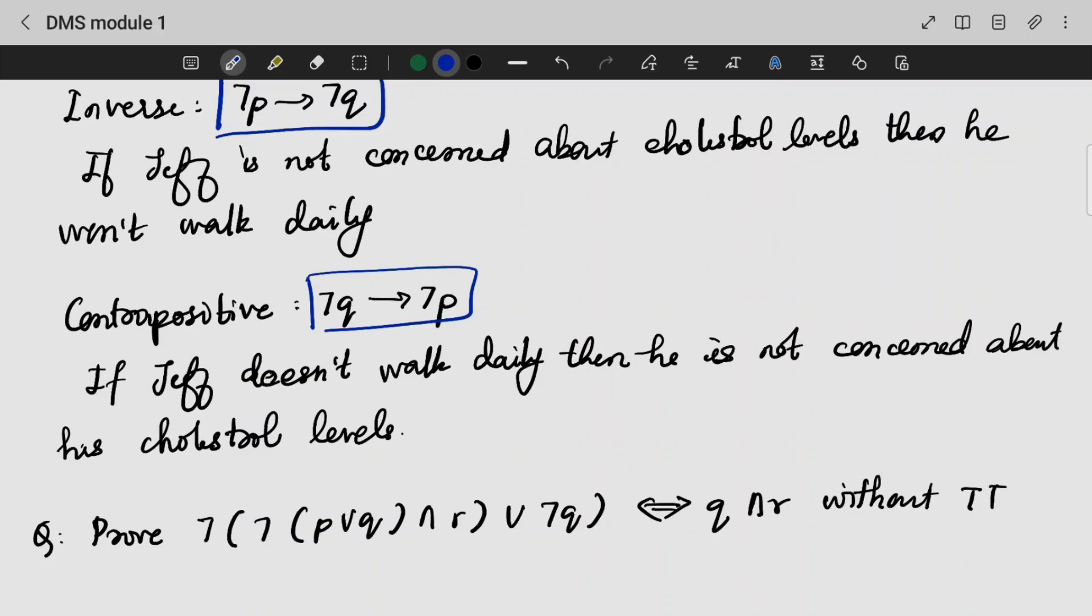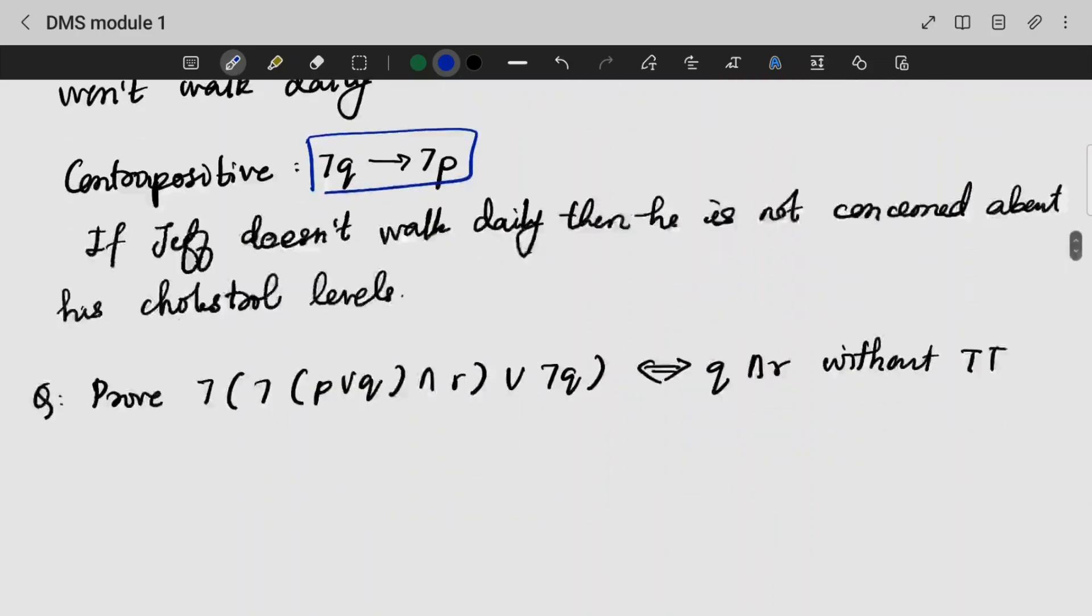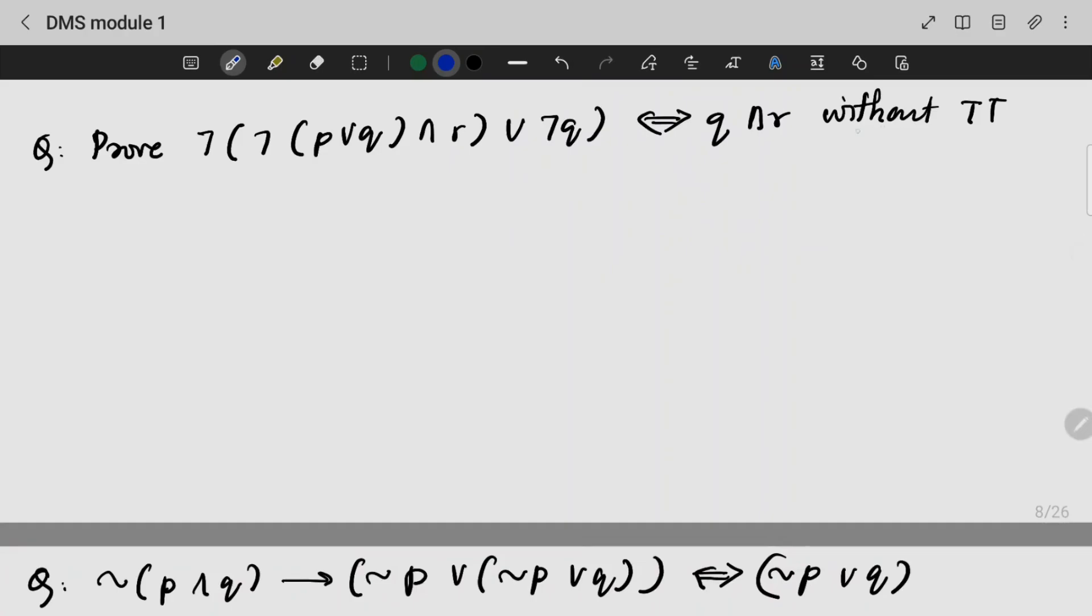If we use the laws, we can solve the next question. We need to prove this particular statement without using a truth table. Usually, if you use truth table it takes more time. If we are using laws of logic, it is very easy. We have to do not of not (P OR Q) AND R. We can use double negation. So, write it and cancel out.